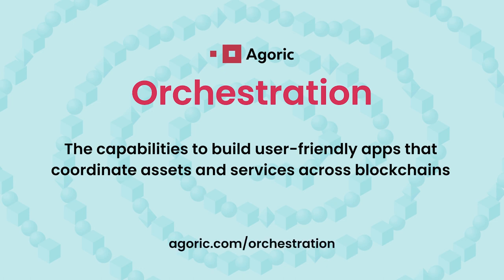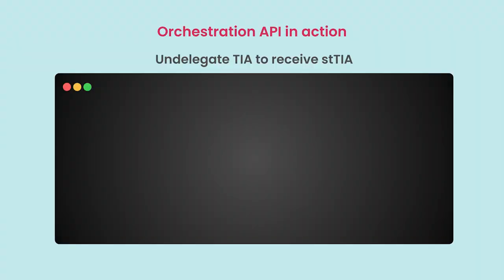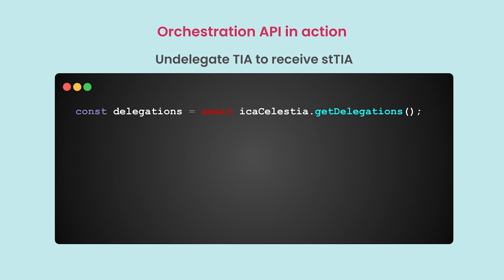How many people here are developers? So we have a small number of developers here, but this code is simple enough and straightforward enough to express what that poor Zucky needs to do. This is software in JavaScript — 15 million people would understand it already — running on chain, running on the Agoric chain, but coordinating the activities of multiple other chains. From this smart contract, reach out to Celestia, find out how much do I have delegated, and then tell it to undelegate that.